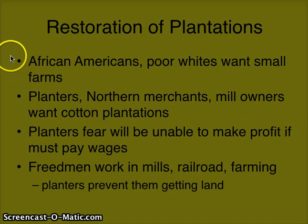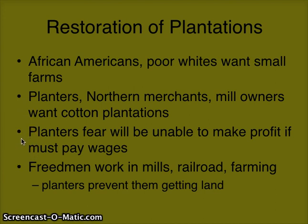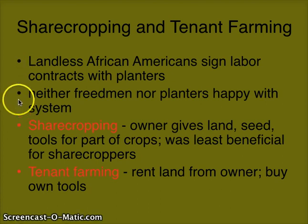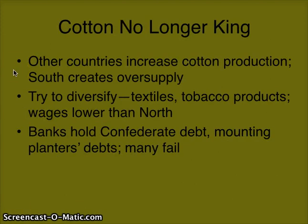There is also a restoration of plantations. African-Americans and poor whites want small farms, but Northern merchants and rich planters want to bring back the plantation system and cash crops. Planters fear they won't make a profit since they must now pay their former slaves. Many freed men are working in mills, railroads, and farming. We also see sharecropping emerge — landless African-Americans signing labor contracts with planters, leaving neither freed men nor planters fully satisfied. Lastly, we see the death of cotton as the dominant cash crop, no longer as necessary as before. This week's question: how is the Southern economy weakened after the Civil War?